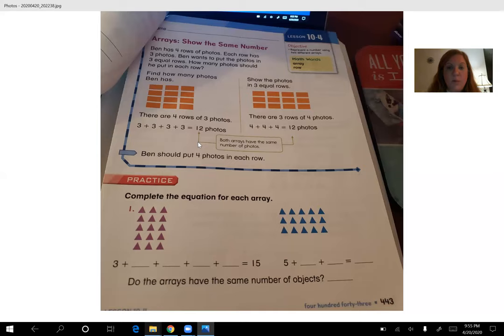Let's look at number one together. Complete the equation for each array. Okay, so we have purple triangles. I see five rows, and in each row I see three purple triangles. Do you see that? Let me take my little pen here. So here's row one, row two, row three, row four, row five, and in each row, one, two, three. So what would I put down here? I'm going to have 3 + 3 + 3 + 3 + 3 gives me 15. Three, if you're good at counting by threes, 6, 9, 12, 15.